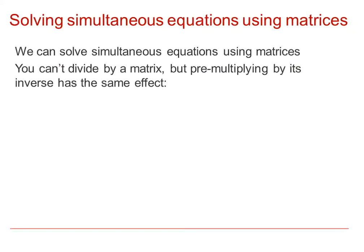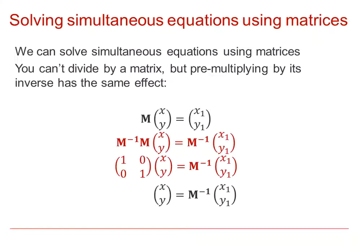We can solve simultaneous equations using matrices. Although you can't divide by a matrix, pre-multiplying both sides by the inverse matrix will have the same effect. So if we are looking at matrix M times XY equals a point X1Y1, if we pre-multiply both sides by the inverse of M, we create the identity matrix on one side and therefore XY on one side. So by pre-multiplying both sides by the inverse of M, we can get XY equals the inverse of M times the point X1Y1.